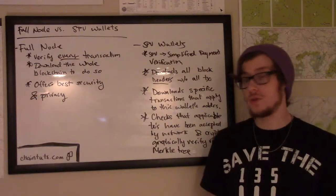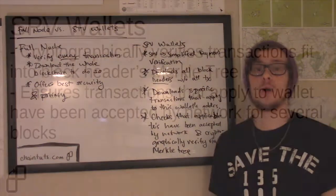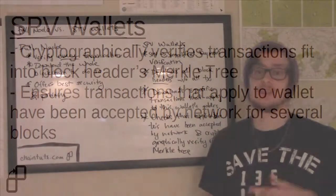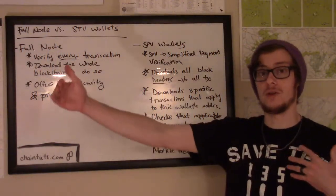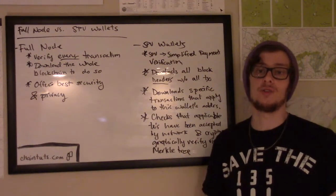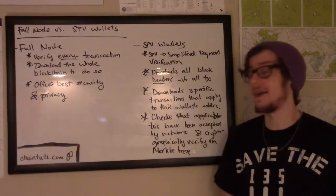What these wallets do then is they check that the applicable transactions have been accepted by the network. But instead of verifying them by looking at the whole blockchain all the way back, they trust that if a transaction has been accepted by other nodes on the network for a couple of blocks — say that this transaction is at least six blocks back from the new block being generated — they can assume that the network is going to accept the amount of currency that wallet user has as valid and owned by that user.